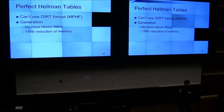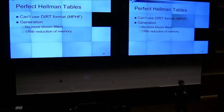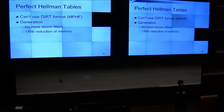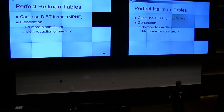There is one problem with Hellman tables: you can't use minimal perfect hash functions to store them, because for each table you do chain-length lookups and there are N to the one-third tables. Each time you do a lookup you're given a start point because it's a destructive index — so you'd have to store a bunch of bits to indicate this, and those extra bits would pretty much defeat the purpose.